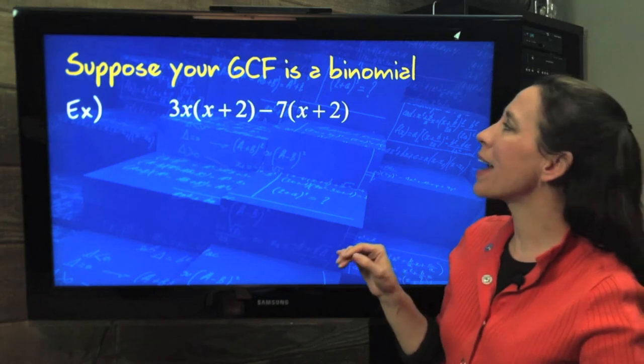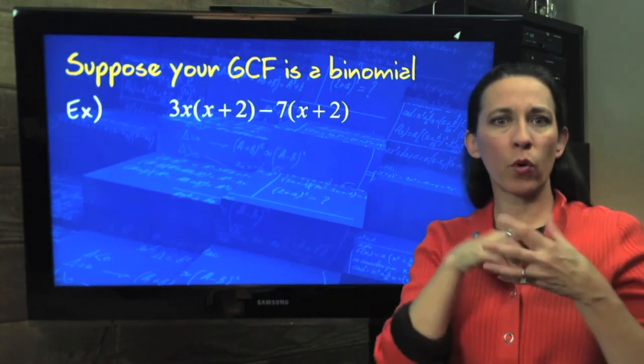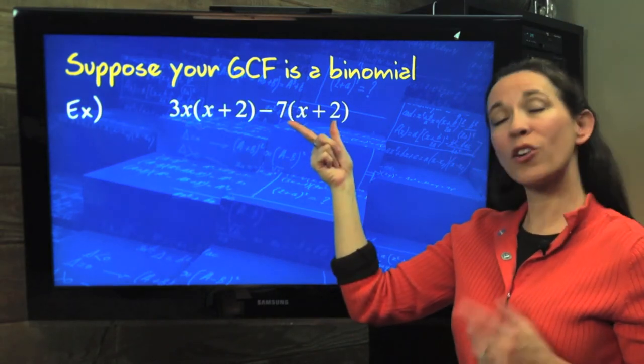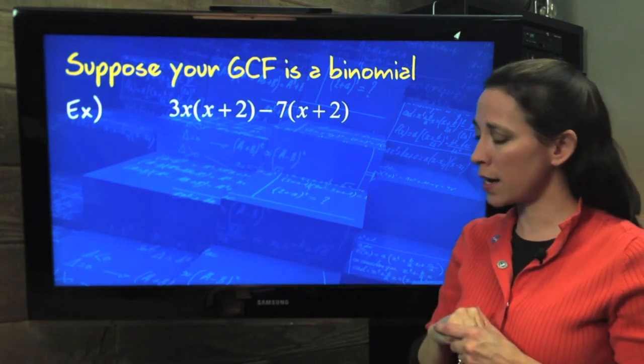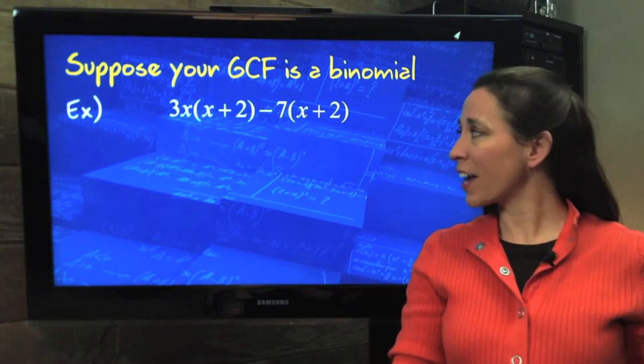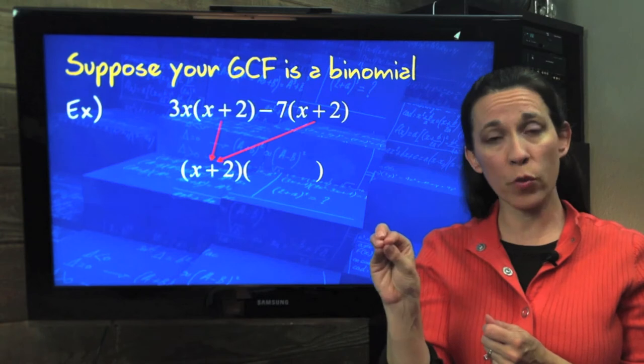So let's imagine our GCF now being a binomial and not just a number or variable. In this piece here, it has an x + 2, this piece here also has an x + 2, and they're separated by the subtraction sign. So visualize factoring out an x + 2 as your single GCF, just like we did with the 2 previously.